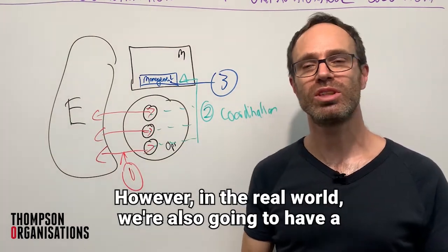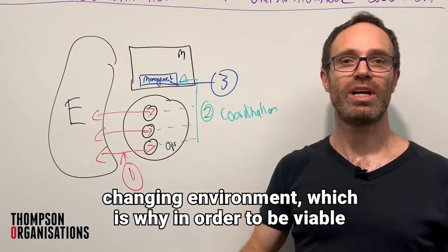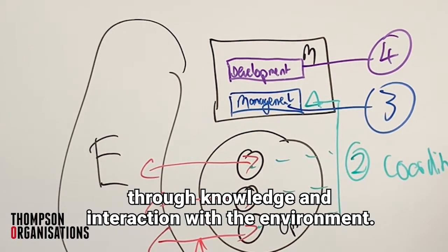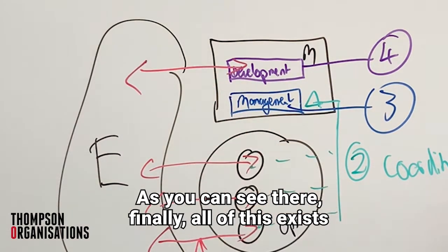In the real world, we're also going to have a changing environment, which is why in order to be viable, we need to have development, which is System 4. And development occurs through knowledge and interaction with the environment, as you can see there.